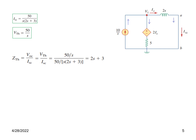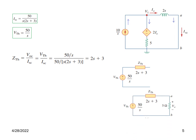We can now draw the Thevenin equivalent circuit consisting of the voltage source V_Thevenin and impedance Z_Thevenin. We reconnect the separated load and use simple Ohm's law: total voltage divided by total impedance, multiplied by the 5-ohm load. This gives us V0(S) in the S-domain. That is the answer to the first part.